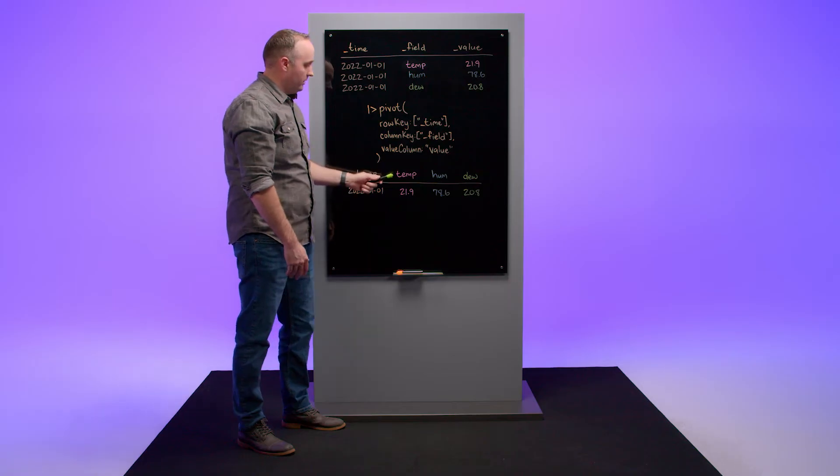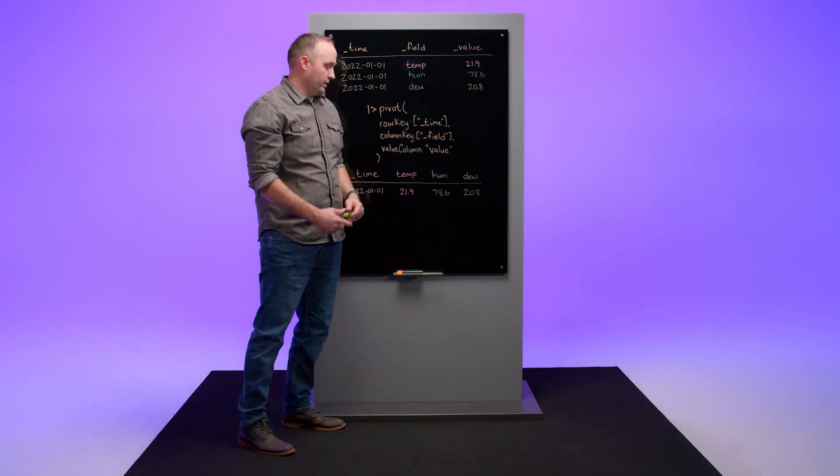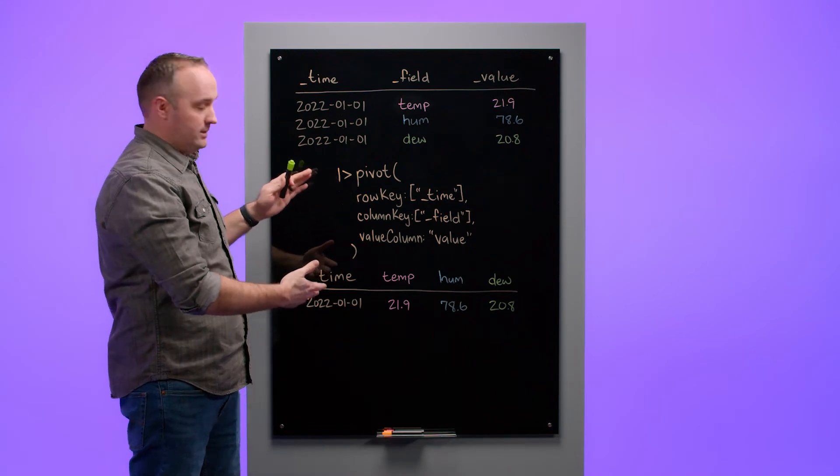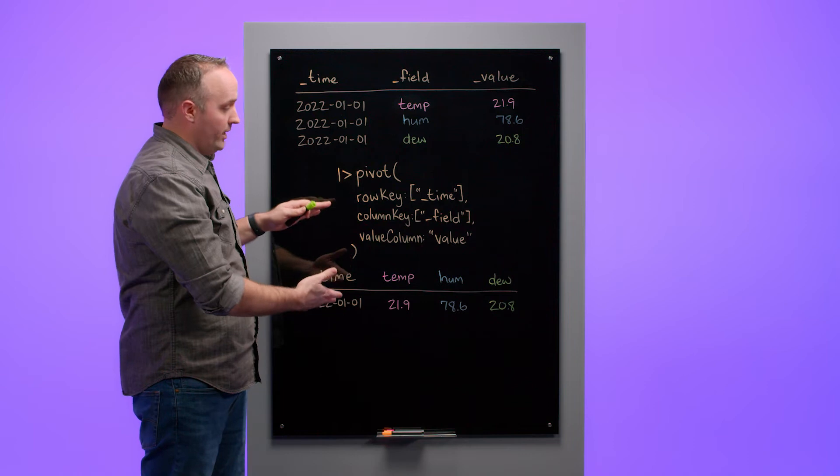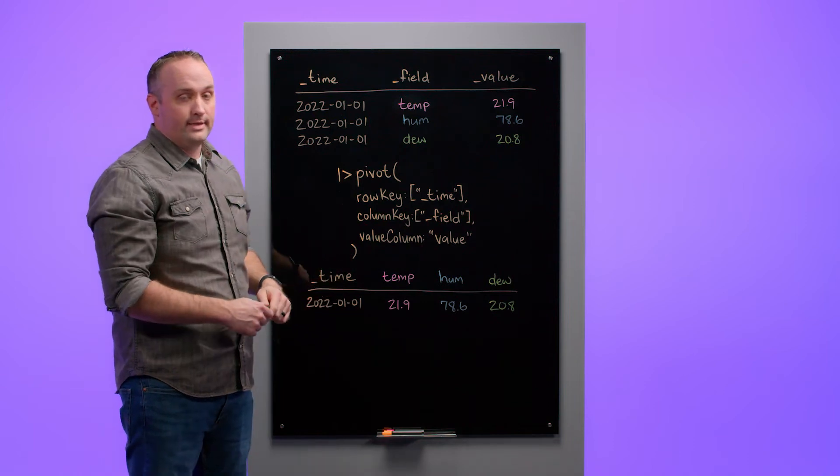So I have a new temp column, humidity column, and dew point column. With these columns aligned in a single row based on time, I can then use map or other operations to operate on these different field values at the same time.